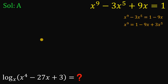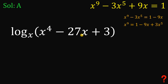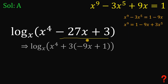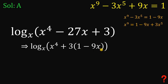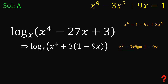Now let's look at the expression we want to evaluate: logarithm of x raised to the fourth power minus 27x plus 3 to the base of x. Focus on the two terms negative 27x plus 3. We can factor out positive 3 from these two terms, giving us 3 multiplied by the quantity negative 9x plus 1, which is equivalent to 3 times the quantity 1 minus 9x. We can now use our first result, since 1 minus 9x equals x raised to the ninth power minus 3x raised to the fifth power, and replace accordingly.